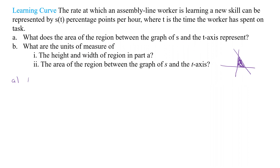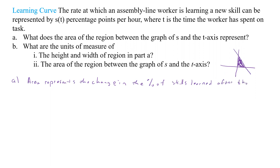That area represents the change in the percent of the skill learned. Since the function gives percentage points per hour for learning a new skill, the area of the region between the graph and the T-axis is the percentage of the skill that is learned after T hours.